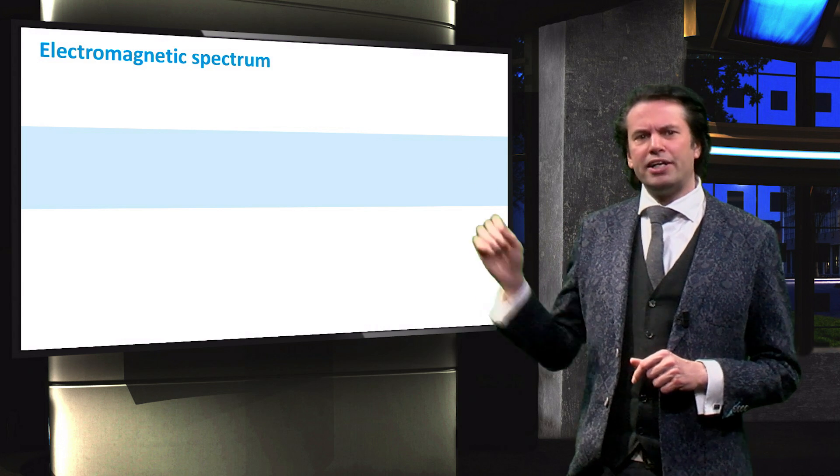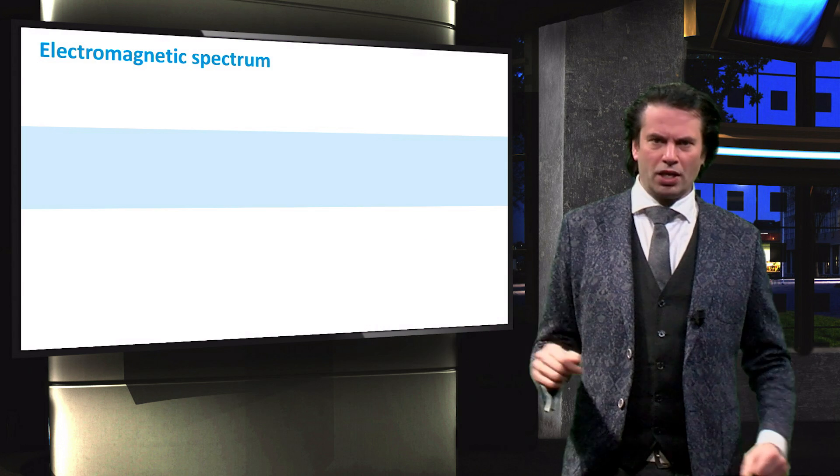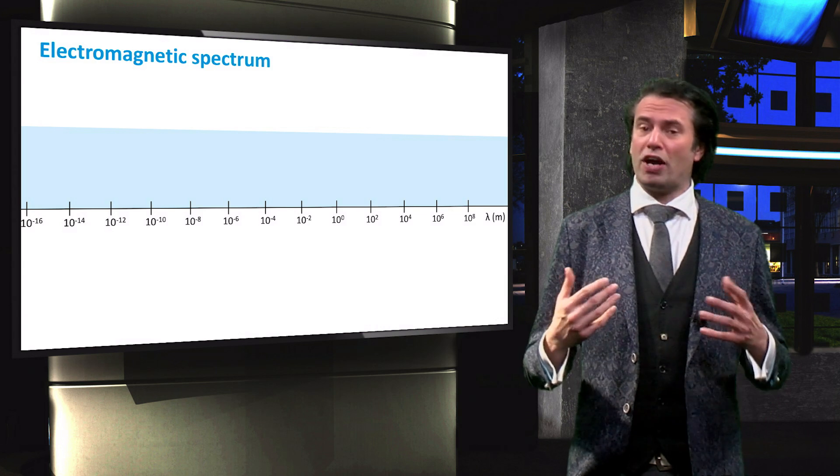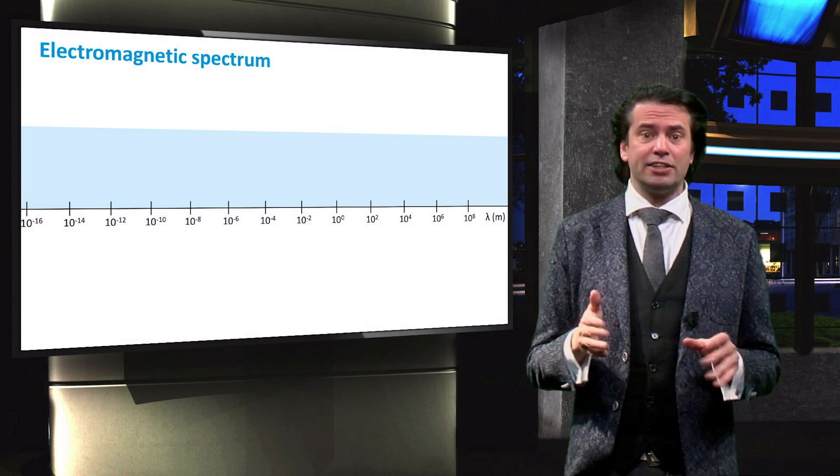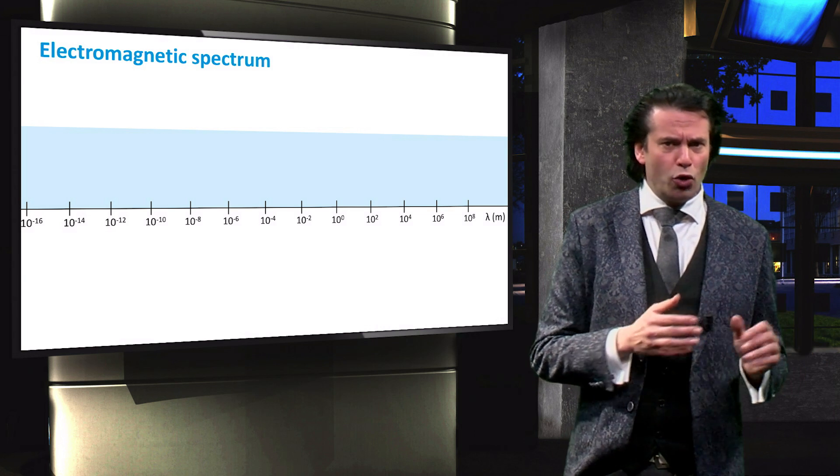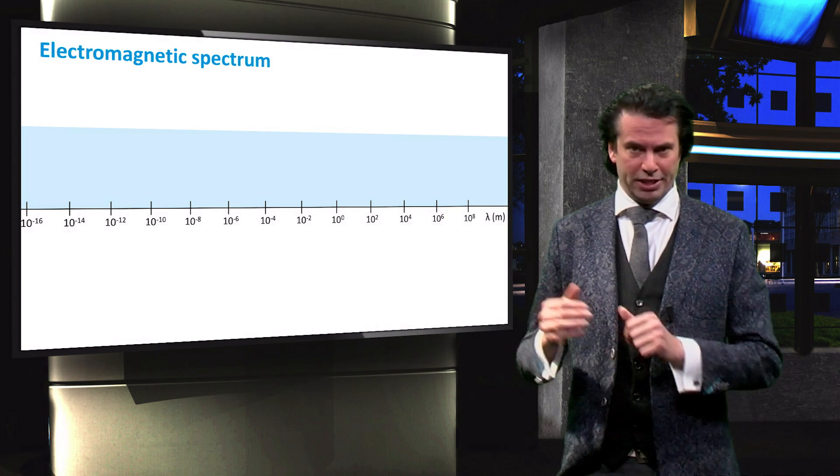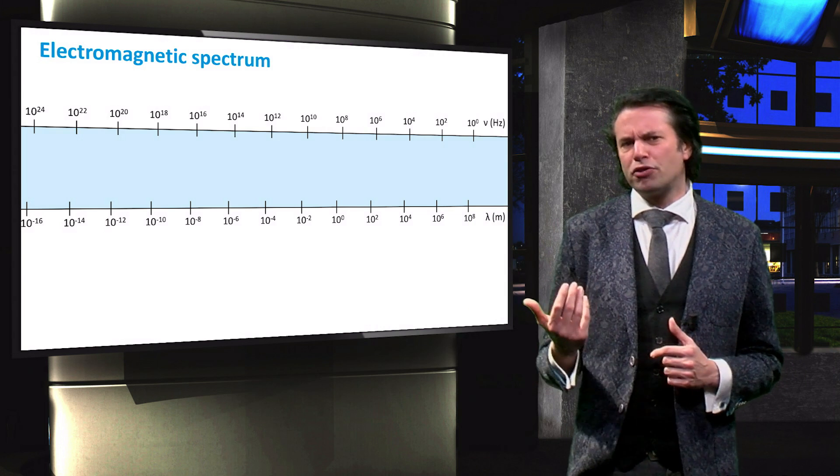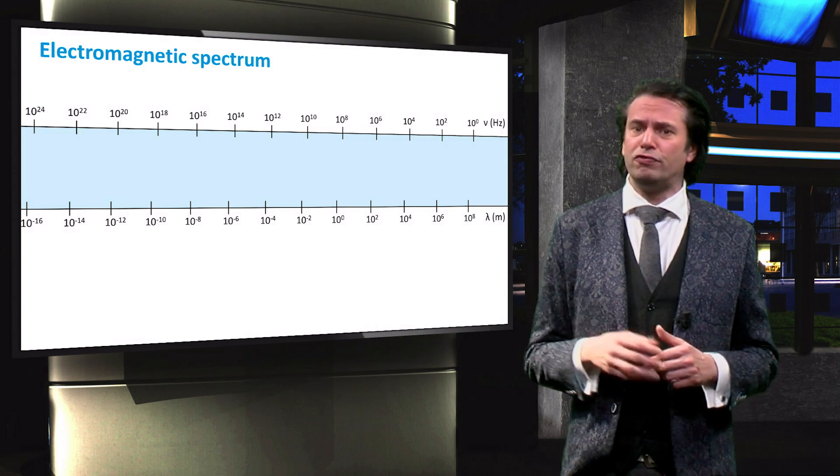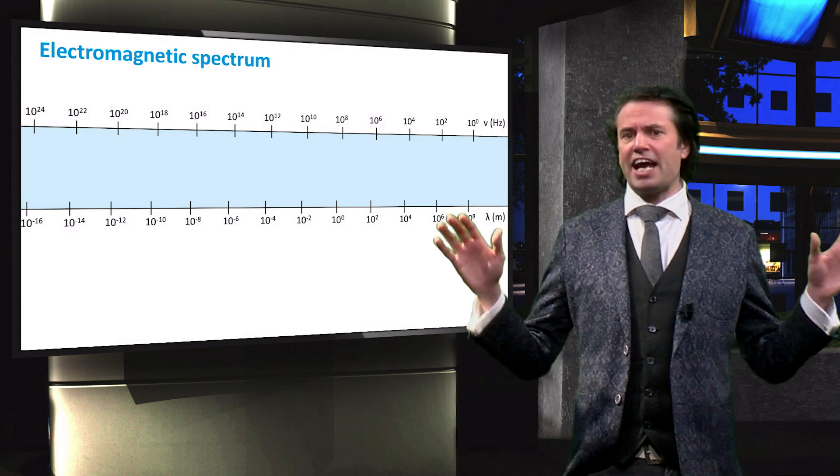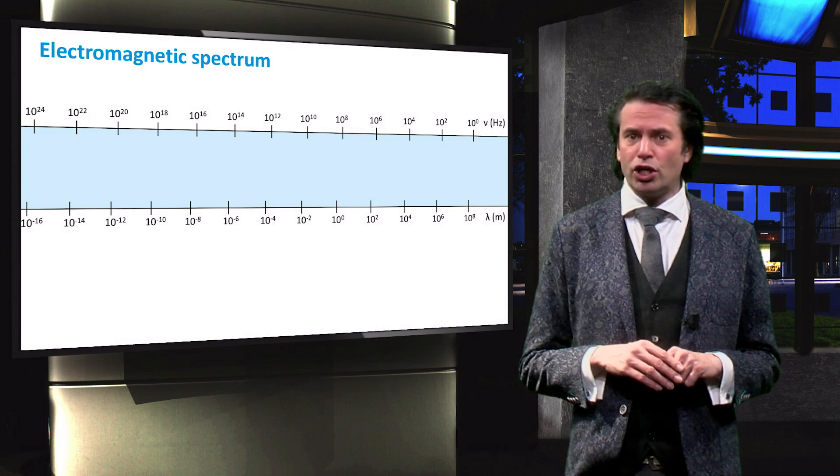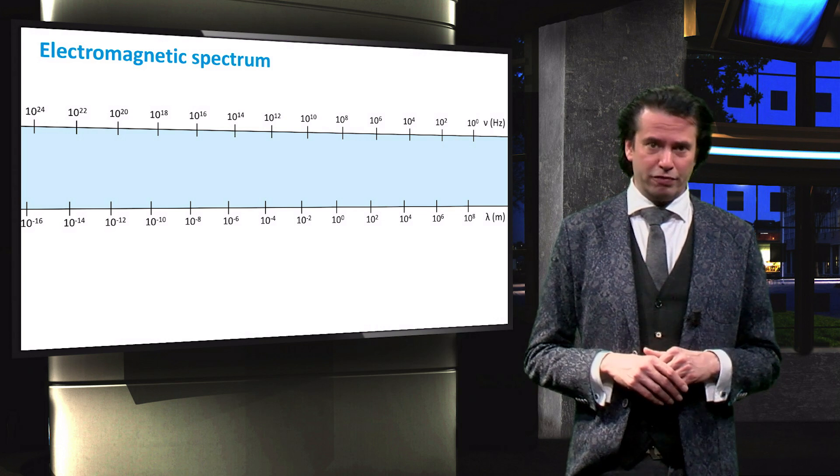This blue bar is the full spectrum. We introduce an axis for the wavelength, ranging from wavelengths smaller than 10 to the power minus 16 meters to over 10 to the power 8 meters. We also introduce an axis for frequency, for which we use the speed of light in vacuo. The frequency axis ranges from 1 hertz to about 10 to the power 24 hertz.